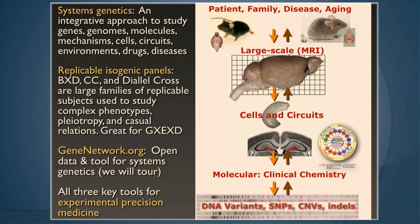The motherhood and apple pie integration that everybody has been talking about since about 2000 — how do you actually deliver that? What those little arrows on the slide represent to me is mutual information, correlation, and that requires a sample size that's reasonably large — preferably 50, 100, 1,000, 10,000. The beauty of replicable isogenic populations is that you can study G by E, G by G, G by E by drug, by developmental stage, because every genome type is replicable. These are the key substrates we need for experimental precision medicine over the next 10, 20, 100 years.